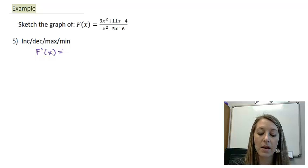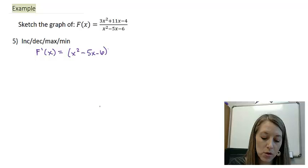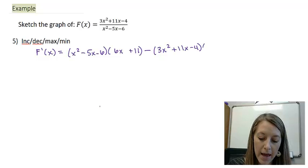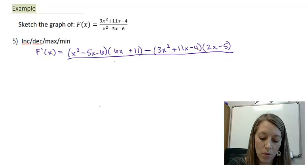And we do that by using our quotient rule. So low d high, the original of the low times the derivative of my high, 6x plus 11, minus high d low, the original of the high times the derivative of my low, all over low low or all over my denominator squared.